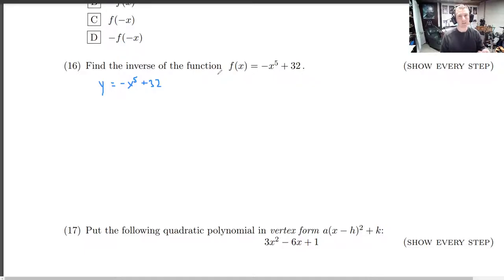What you do is you interchange every x and y. So every x becomes a y, and every y becomes an x. So here on the left, interchange. So we get an x equals negative y to the 5th plus 32. So we've interchanged. And now what we're going to do is we're going to solve for y, if we can.